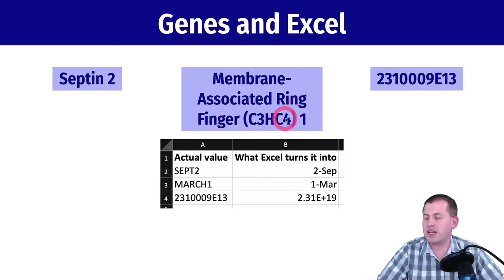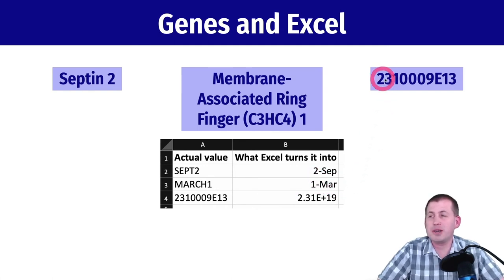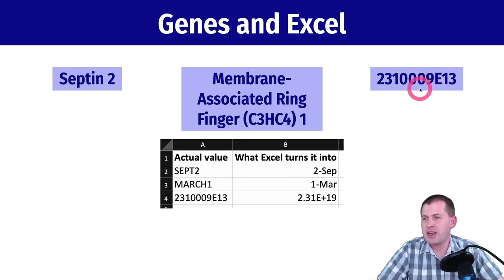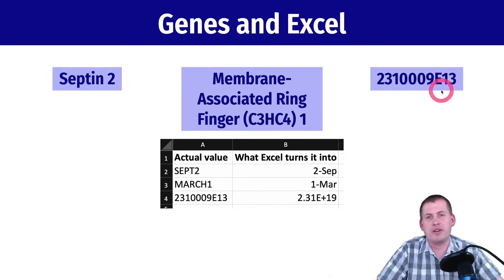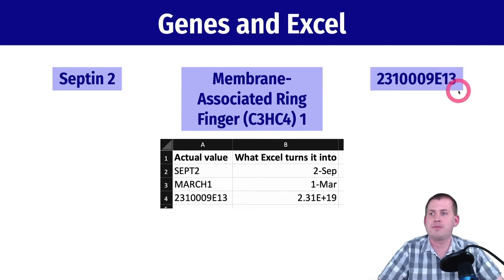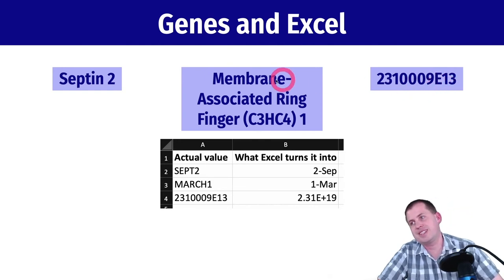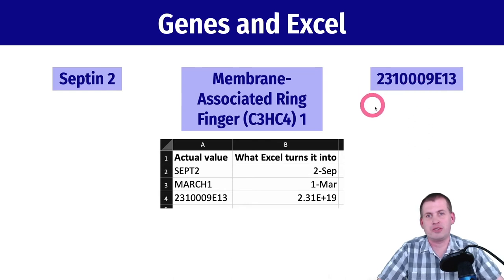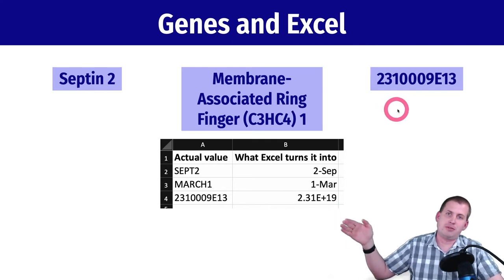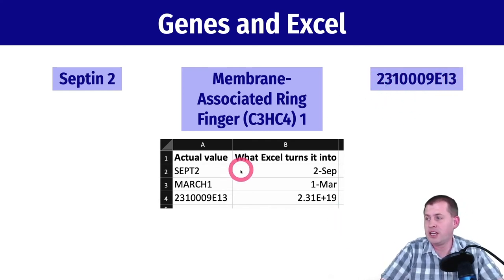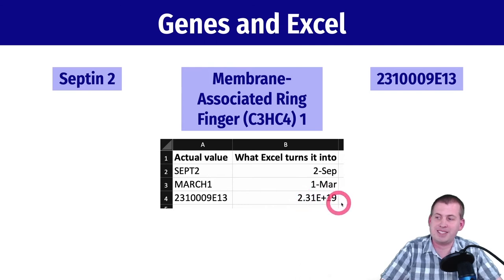Another gene label uses a number followed by E and then 13, which is just the labeling system in genetics. But in Excel and in math, the E has a special meaning: it means move the decimal point 13 places to the right. So this text gets turned into a giant number — 2.31 with the decimal moved 19 places — which is completely wrong. If a bunch of your genes get converted into dates or incorrect numbers and you run a genetic analysis, the script drops all the genes that became dates, skewing the results.